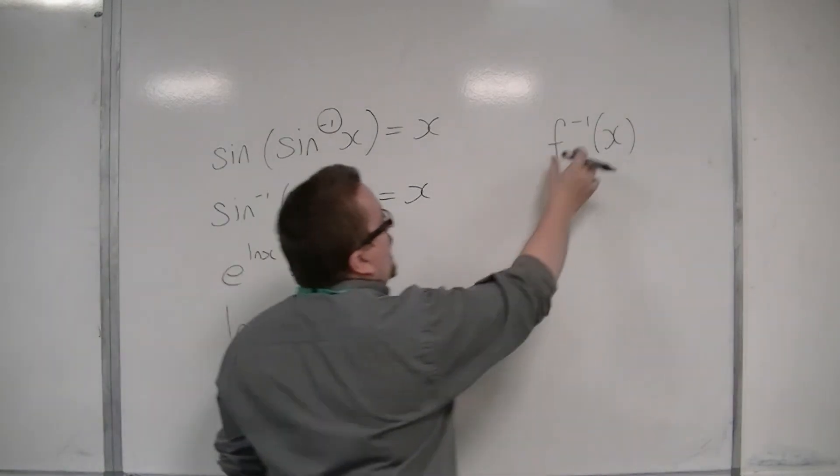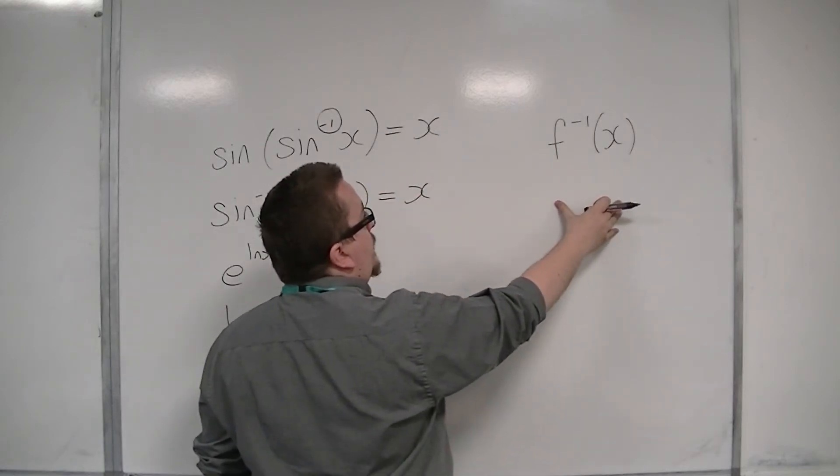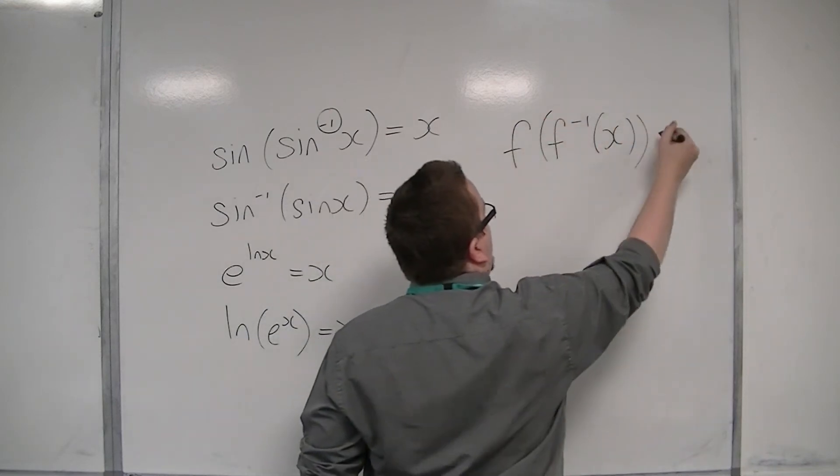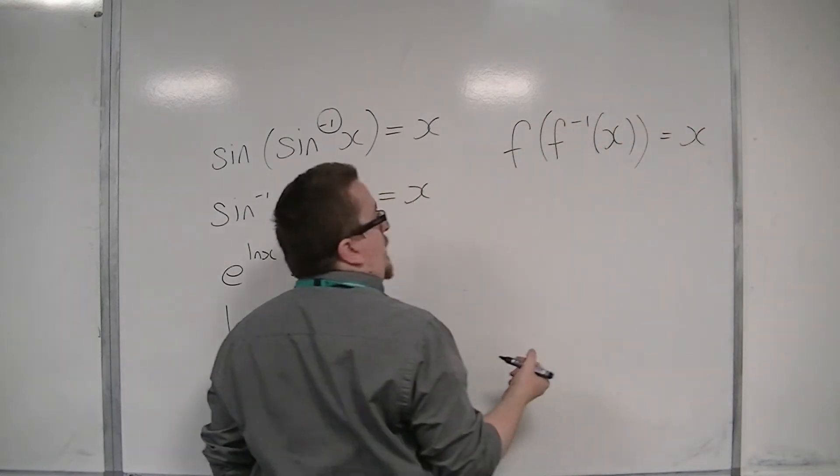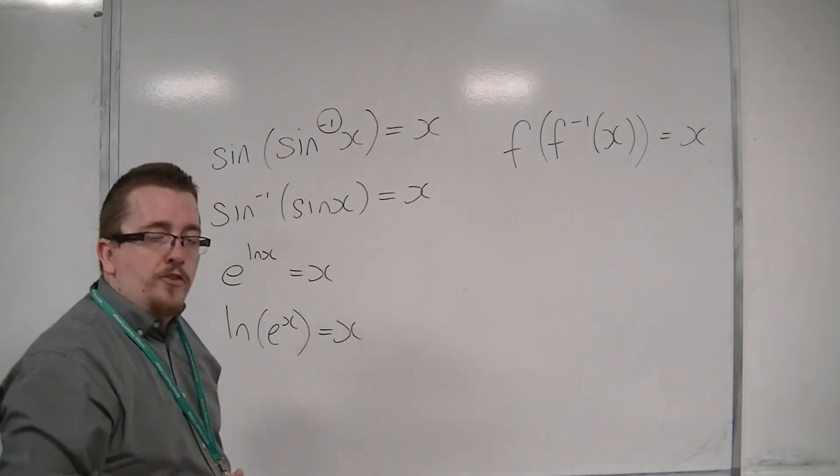We use it as a notation to say that this is the inverse function of x. So if you perform f minus 1 first, and then you perform f, you get back to x. Because f and f minus 1 are inverse functions of one another.